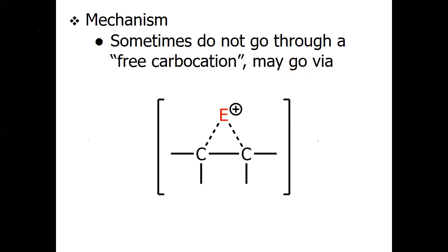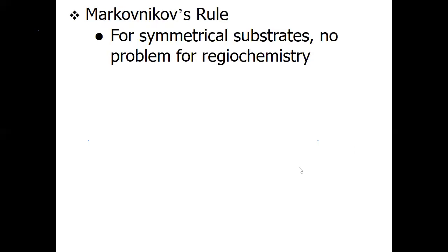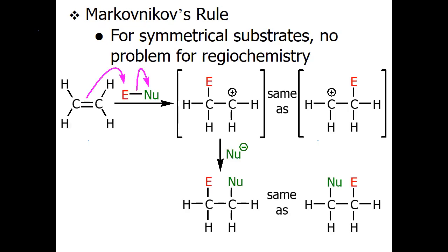Sometimes this addition reaction does not go through a free carbocation — it proceeds via a transition state instead. For symmetrical substrates, let's first discuss the Markovnikov rule: there is no problem with regiochemistry. For example, with a symmetrical alkene, we can add the electrophile on either carbon to give the same carbocation. Both carbocations are equivalent, and then the nucleophile can be added to give the addition product.